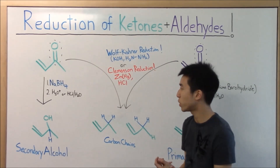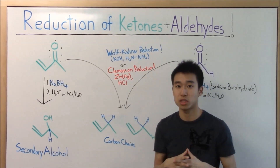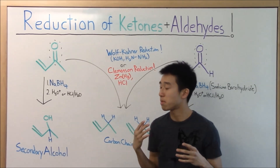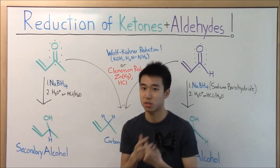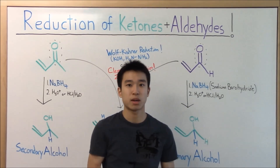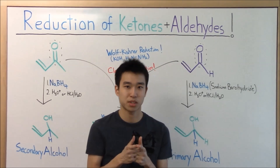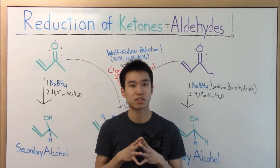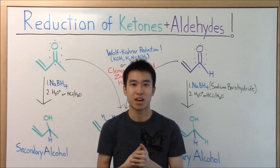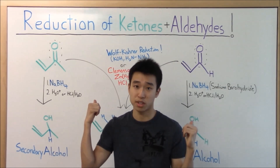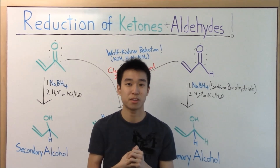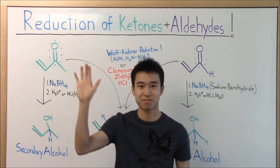That's basically it for the reduction of ketones and aldehydes with sodium borohydride or the Wolff-Kishner. This was a quick overview of the reductions — if you want a more in-depth analysis in my mechanism videos, make sure you check those out. I'll be making them as soon as I can and will update you on Facebook and Twitter. If you liked this video, make sure you like it and tell your friends, get subscribed, and I'll see you in another video!